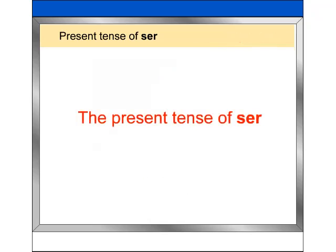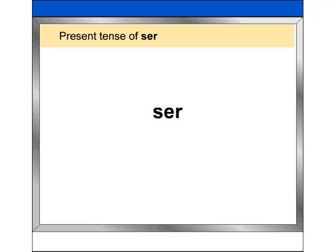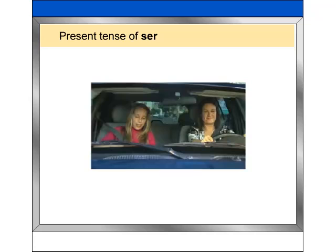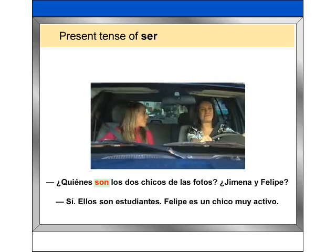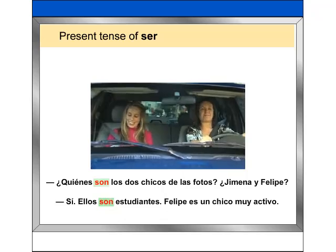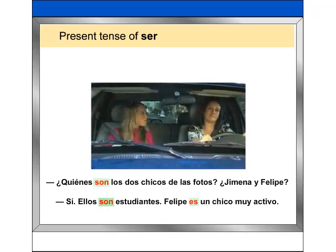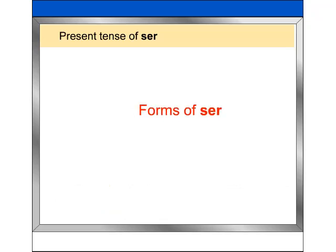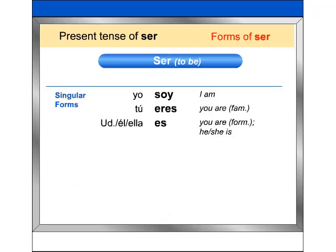The present tense of ser. The verb ser means 'to be' in English. You have already heard some forms of ser in use while watching the first fotonovela episode: '¿Quién es uno de los chicos de las fotos?' 'Ellos son estudiantes.' 'Felipe es un chico muy activo.' Here are the singular forms of ser: yo soy, tú eres, usted / él / ella es.